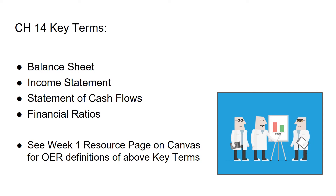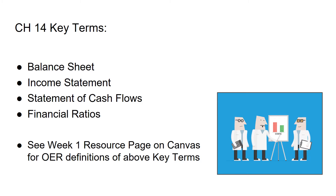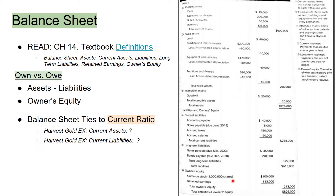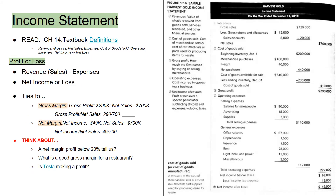The key terms from Chapter 14 are balance sheet, income statement, statement of cash flows, and some financial ratios. I've provided the links in the previous slide and you can always go to the resource page for the OER digital textbook to learn those terms. Owner's equity is like an asset, but it's an asset that can't be liquidated — current assets and long-term assets can be sold off and liquidated into cash if a company goes bankrupt, while owner's equity is their piece that they own. The balance sheet is what you own versus what you owe, and the income statement tells us if you're making or losing money.